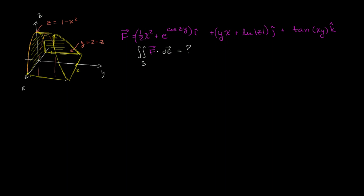Let's see if we might be able to make some use of the divergence theorem. I have this simple solid region right over here. x can go between negative 1 and 1. z — this arch part right over here — is a function of x and is the upper bound on z, while the lower bound on z is just 0. y is bounded below by 0 and above by the plane y equals 2 minus z. We're given this crazy vector field and asked to evaluate the flux of our vector field across the surface of this region.